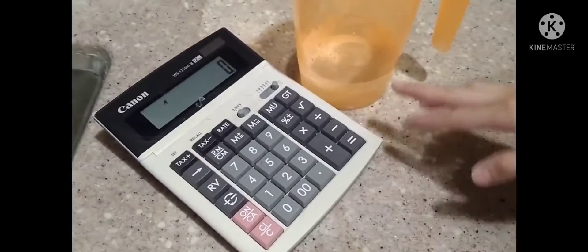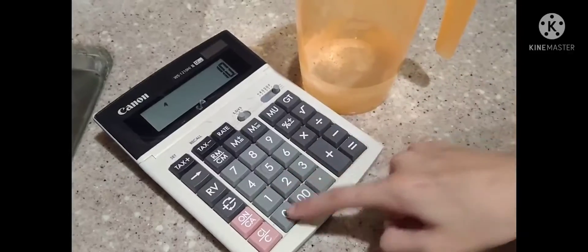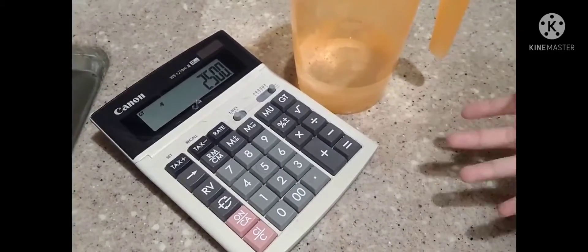So it is 250, so we're going to calculate 250 times 10, and it equals 2500 ml. So this means I use 2500 ml in a minute.